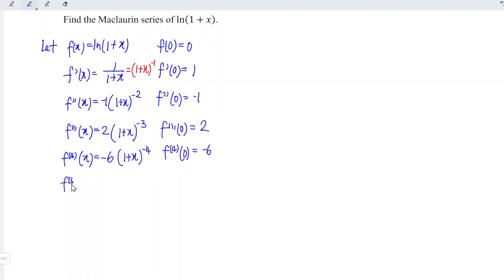For the fifth time, we have negative times negative, which is positive. 6 times 4 equals 24. And we have (1 + x) to the power of minus 5. At point 0,